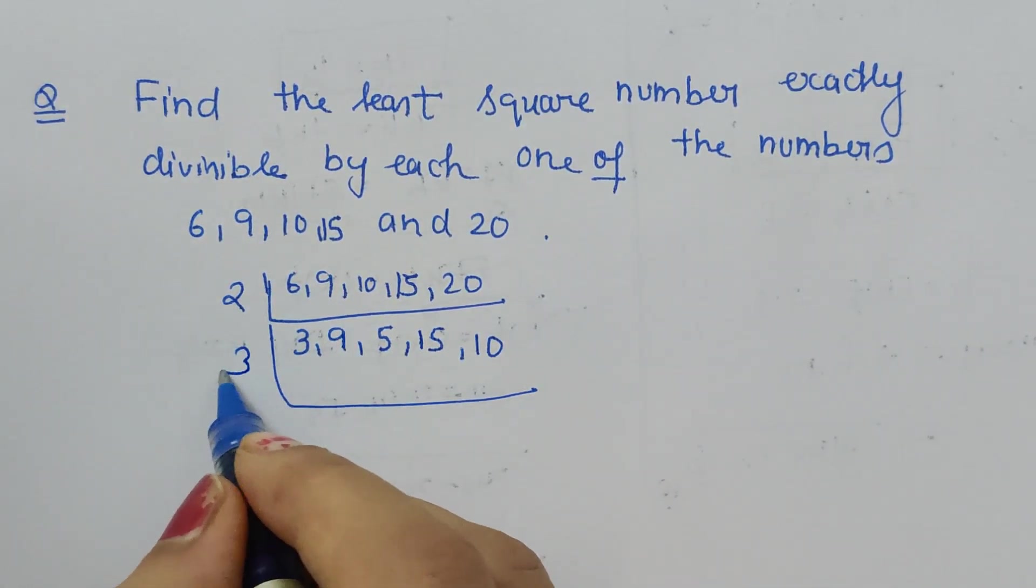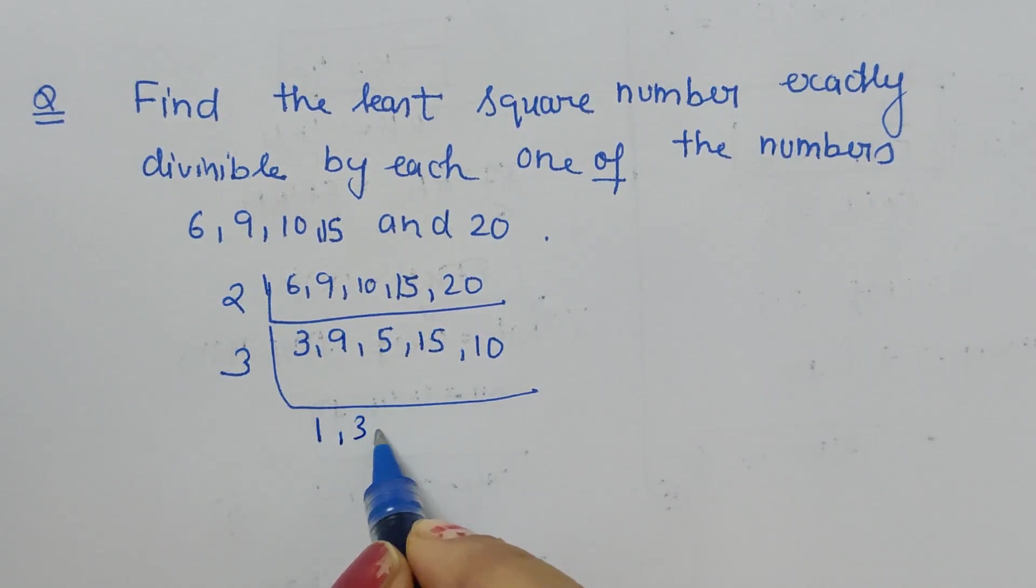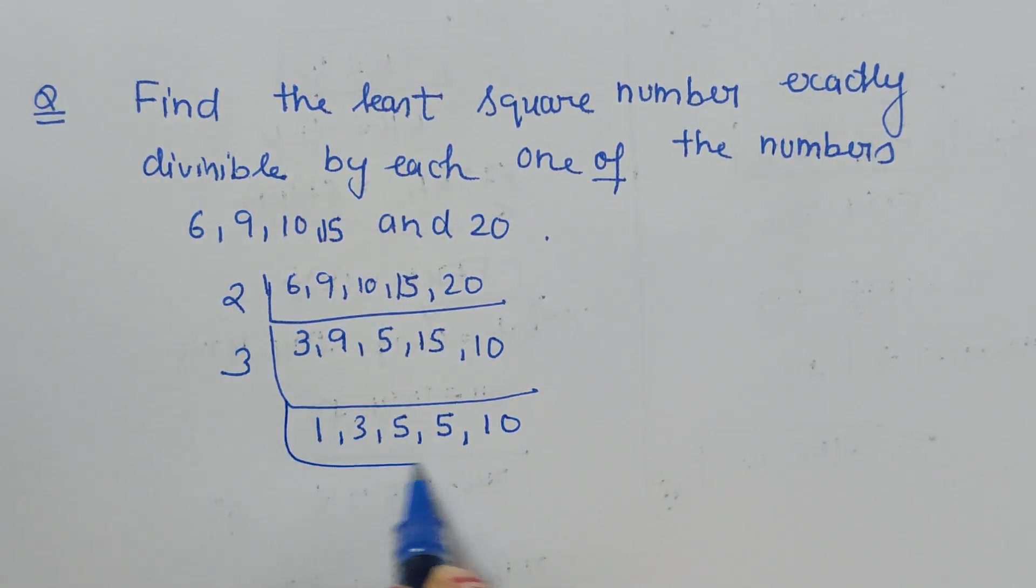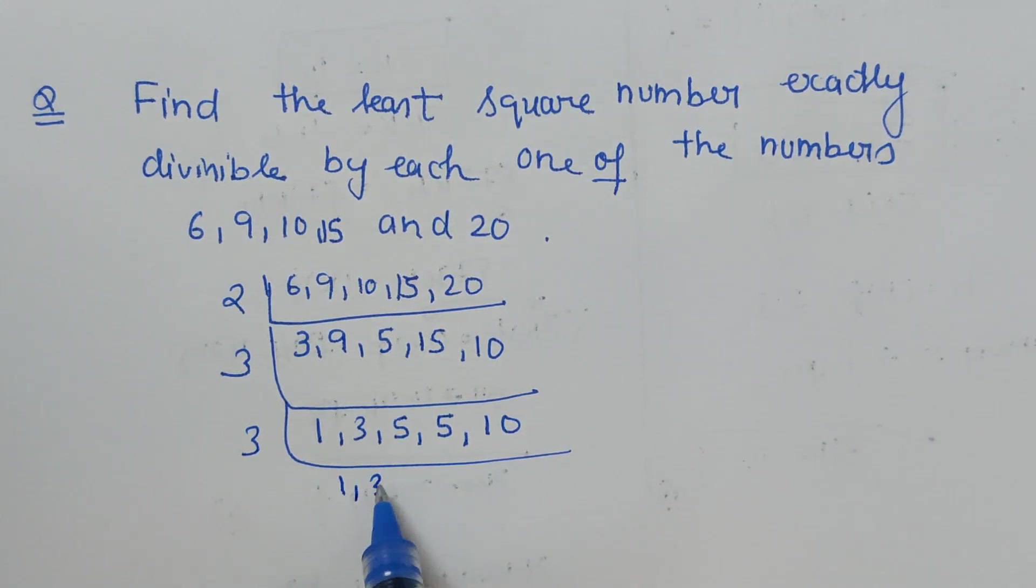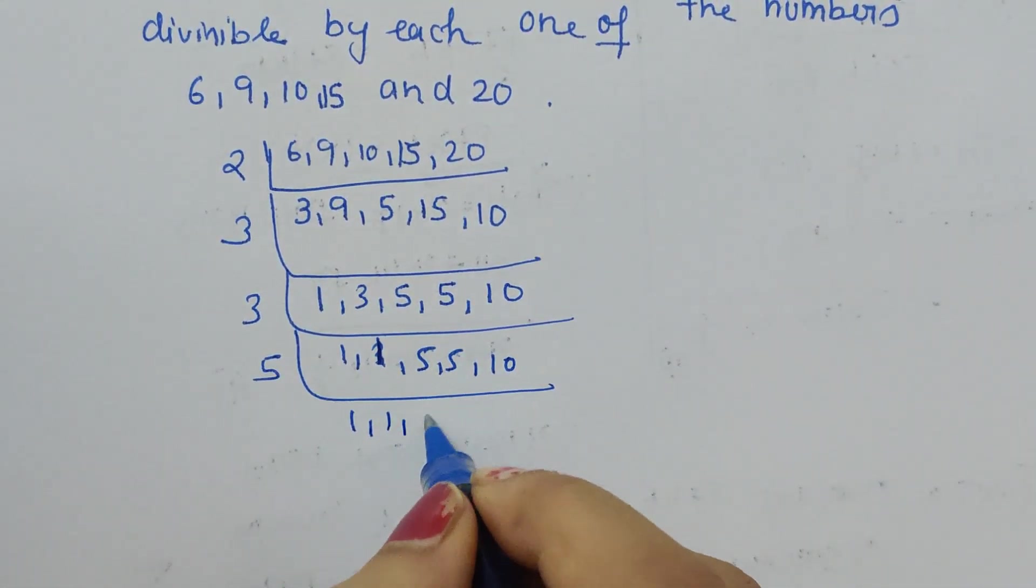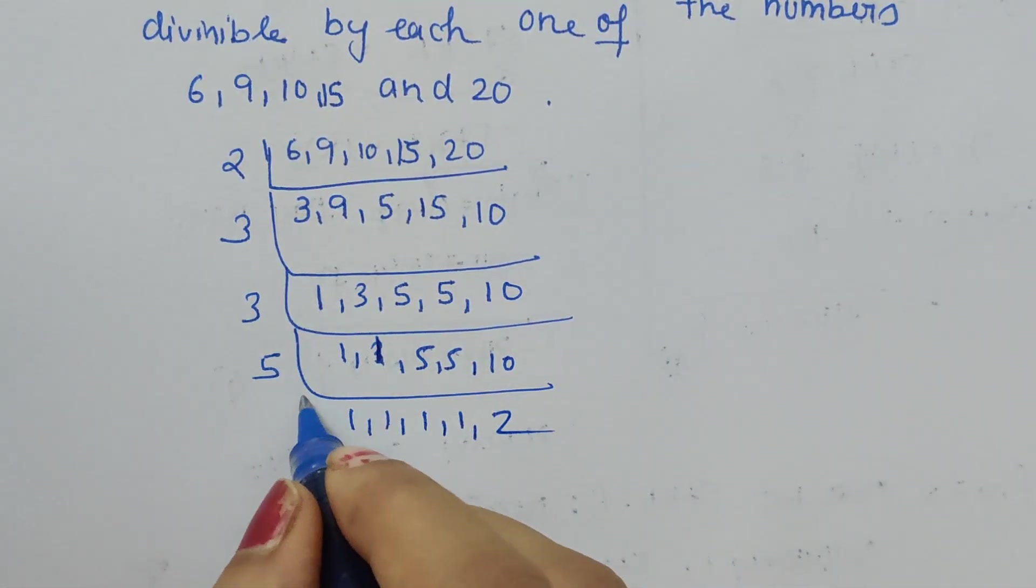Next smallest prime number which will divide is 3: 3 goes into 3 giving 1, 3 goes into 9 giving 3, 5 stays as is, 3 goes into 15 giving 5, and 10 stays as is. Then again by 3: 1, 3 goes into 3 giving 1, 5, 5, 10.